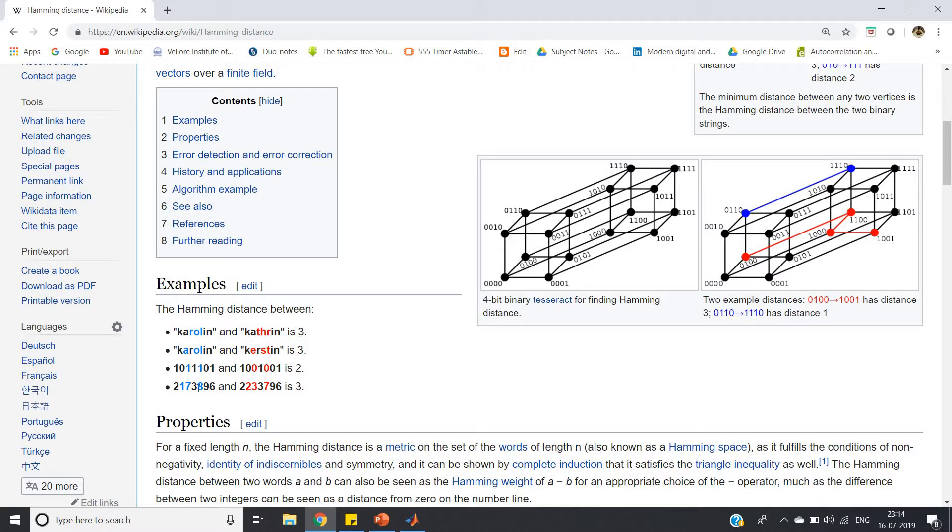The same concept can be implemented for numbers also. Like here, one number is 1017389 6 and another number is 2223379 6. Now if you observe, 1 7 is mismatching with 2 3, and 8 is mismatching with 7. So total number of mismatches is three, so Hamming distance is three.